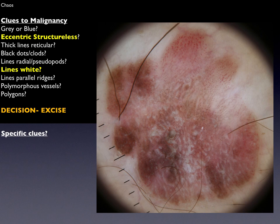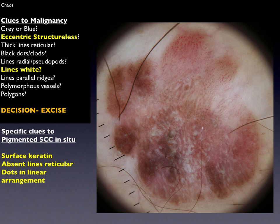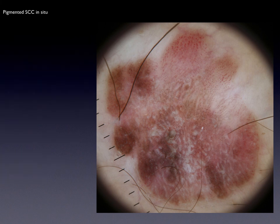Now we look for clues to a specific diagnosis, and there is one very strong clue: dots in linear arrangement. If you look at the top right-hand portion of the lesion you can see some of those dots are red and some are pigmented — this is very specific to pigmented squamous cell carcinoma in situ. As well as absent lines reticular and the presence of surface keratin, best appreciated on the clinical image, these clues point very strongly to the histological diagnosis of pigmented squamous cell carcinoma in situ.